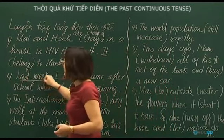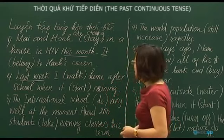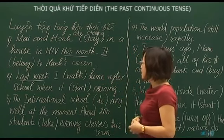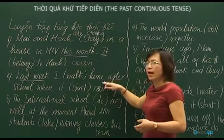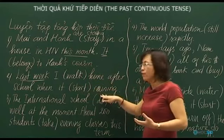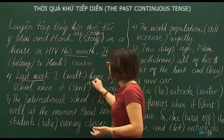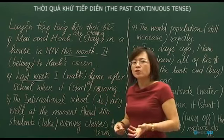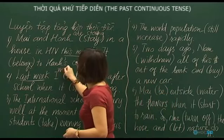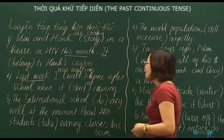Sentence 2: 'Last week' — a past time marker. We read the full sentence: 'I was walking home after school when it started raining.' The verb after 'when' is simple past. The walking action is long: 'I was walking.' The starting to rain is short and interrupts: 'when it started raining.'